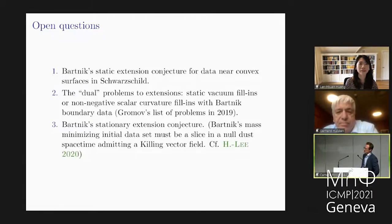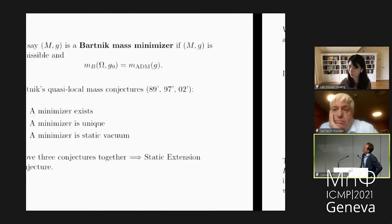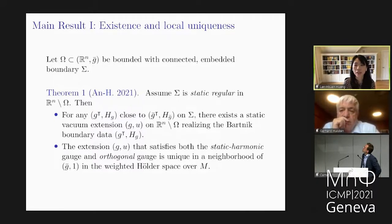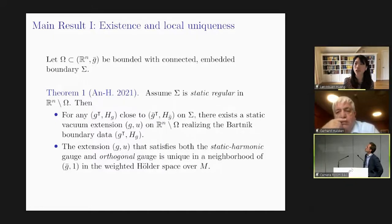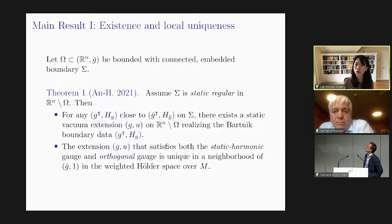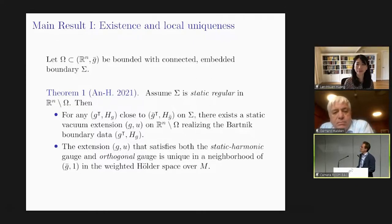Maybe I'll ask one question about uniqueness in your first theorem. You don't have geometric uniqueness — you only have uniqueness in a particular gauge. Do you expect stronger uniqueness? Actually this is geometric uniqueness: we show that for any given solution, looking at its orbit under the diffeomorphism group, there is a unique one satisfying both gauge conditions. The most interesting part is the local uniqueness — we only show it in a neighborhood of the background data. Global uniqueness turns out to be a very hard question — I'm not aware of any uniqueness of static solutions other than the structural uniqueness, so global uniqueness will be very difficult.